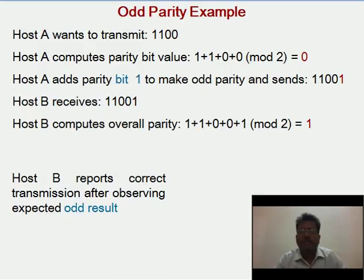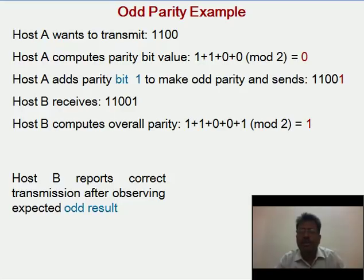Example for odd parity: Host A wants to transmit 1100. It computes the parity by taking mod 2, which is 0. To make an odd parity message, Host A adds parity bit 1 and sends the message as 11001. Host B receives 11001 and computes the overall parity, reporting correct transmission after observing the expected odd result. The sender transmitted with odd parity and the destination also computes odd parity as 1, meaning there is no error during transmission.